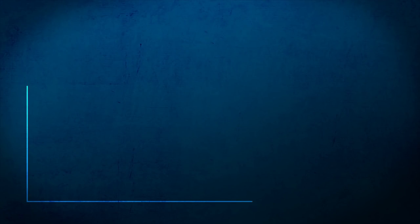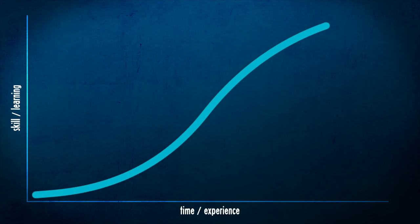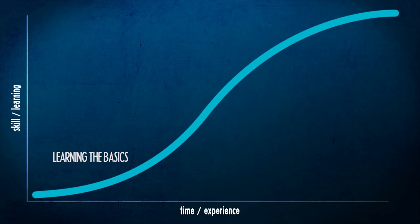Here we have a juicy graph — on the y-axis we have skill or learning, and on the x-axis we have time or experience. The first curve is the basic S-curve, probably the most common one. It's got a slow start as you delve into the completely unfamiliar world with new mechanics and maps, then you start learning quickly through the mid-game, and then at the end you slow down again as you start to master the game.